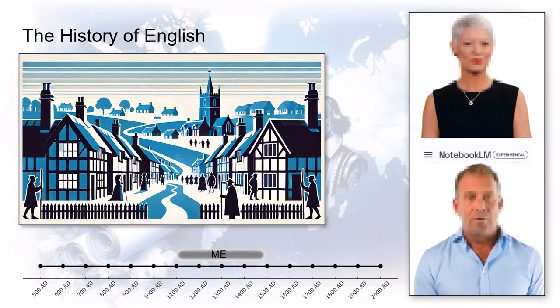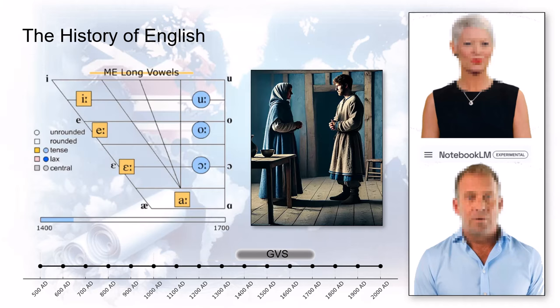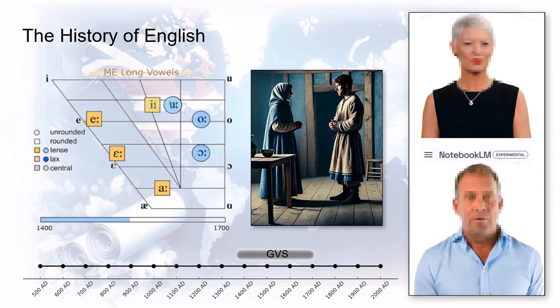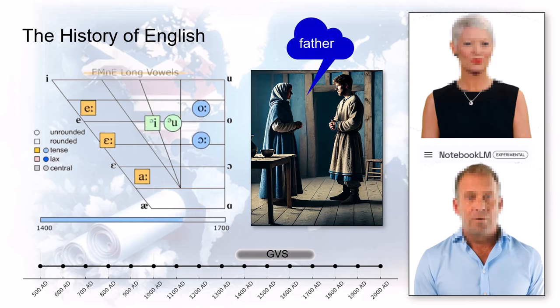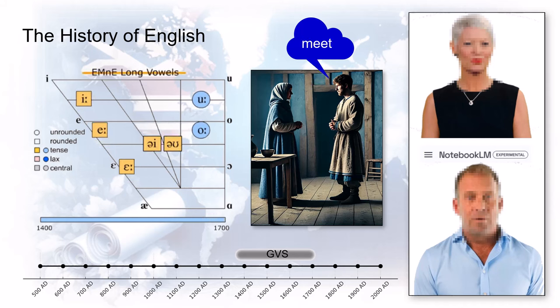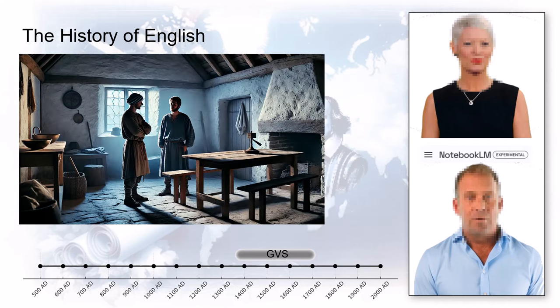That transformation is where things get even more interesting — it all starts with something called the Great Vowel Shift. It sounds technical, but it's this huge change in how people pronounce vowels, starting way back in Middle English. Imagine the 'a' in 'father' slowly shifting, the 'e' in 'meat' changing its tune. A linguistic chain reaction. But did people just wake up one day and decide to pronounce things differently?